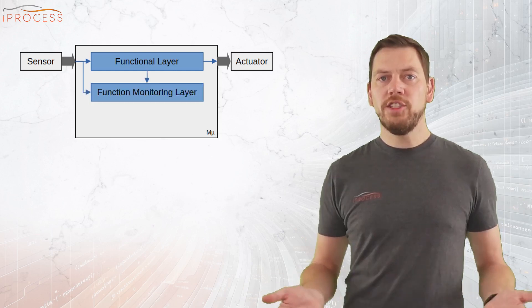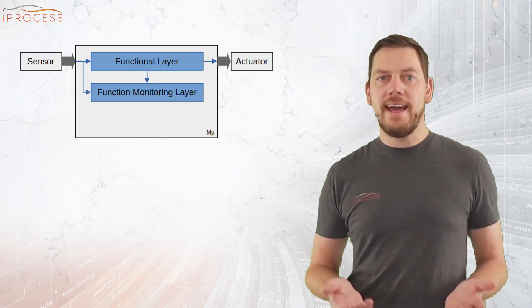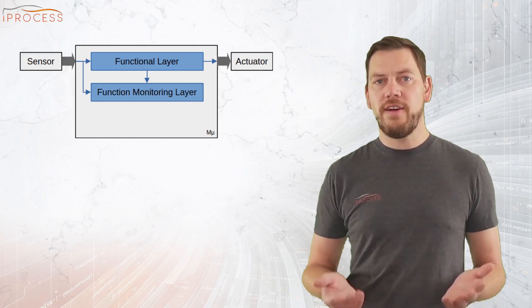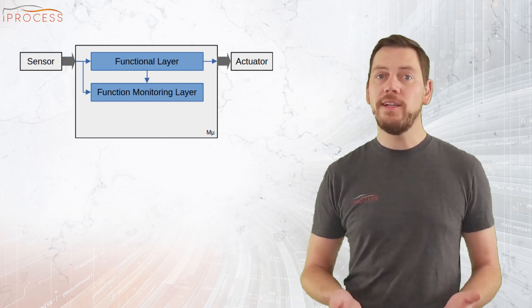Two, the function supervision layer. The second layer acts as a redundant safety layer and monitors the functional layer by calculating the output as well.